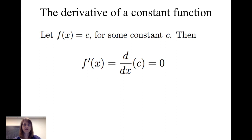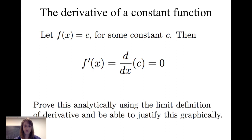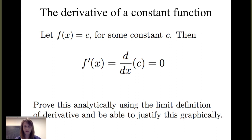Let's first consider the derivative of a constant function. If f of x equals c for some constant c, then the derivative of that constant c is equal to 0. We should be able to prove this analytically using the limit definition of the derivative, and we should also be able to justify it graphically.